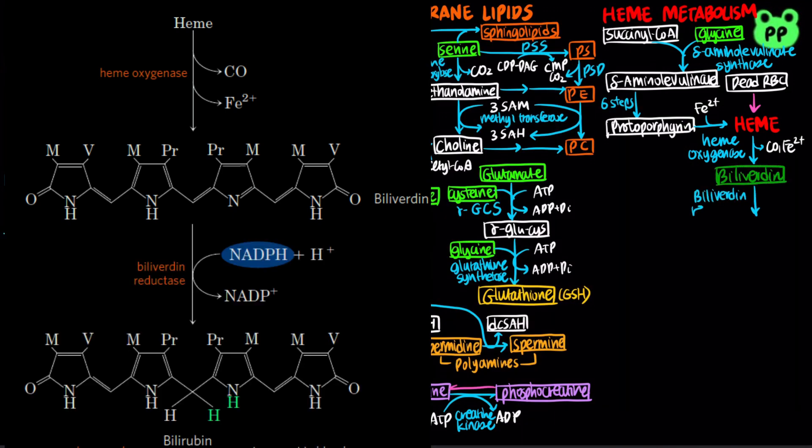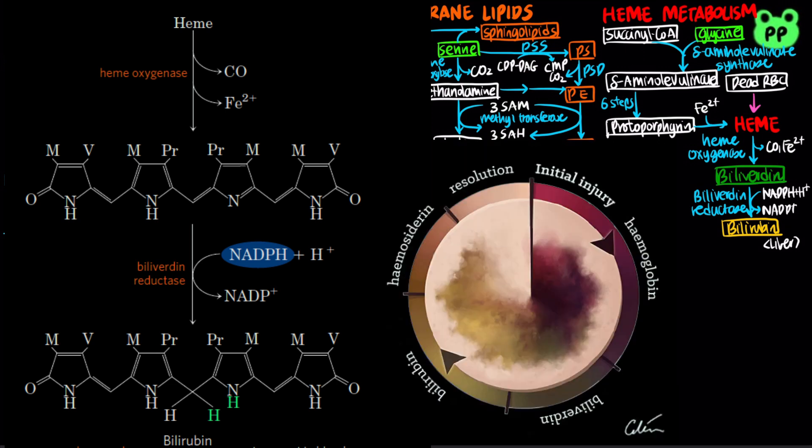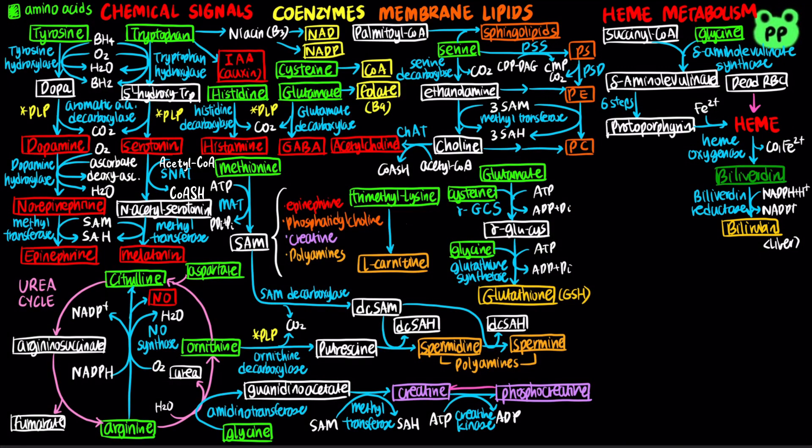Next, biliverdin reductase reduces biliverdin to bilirubin, which is coupled to the oxidation of NADPH to NADP+. Biliverdin and bilirubin are responsible for the change in color of bruises, which changes from initial dark purple to the green color of biliverdin and the yellow color of bilirubin.